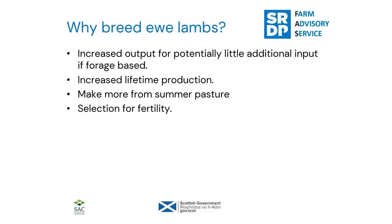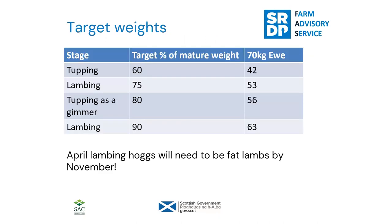It also gives us the opportunity to select for fertility. If we're scanning at 100 percent in hogs with maybe an 85 percent conception rate, what we might do is top 20 percent more hogs, and at scanning time call out that barren 20 percent. This allows us to select for fertility — for animals that reach puberty earlier and are more fertile going forward. In terms of target weights, managing ewe hogs is really about achieving sufficient growth and maturity to do a good job as a breeding ewe hog.